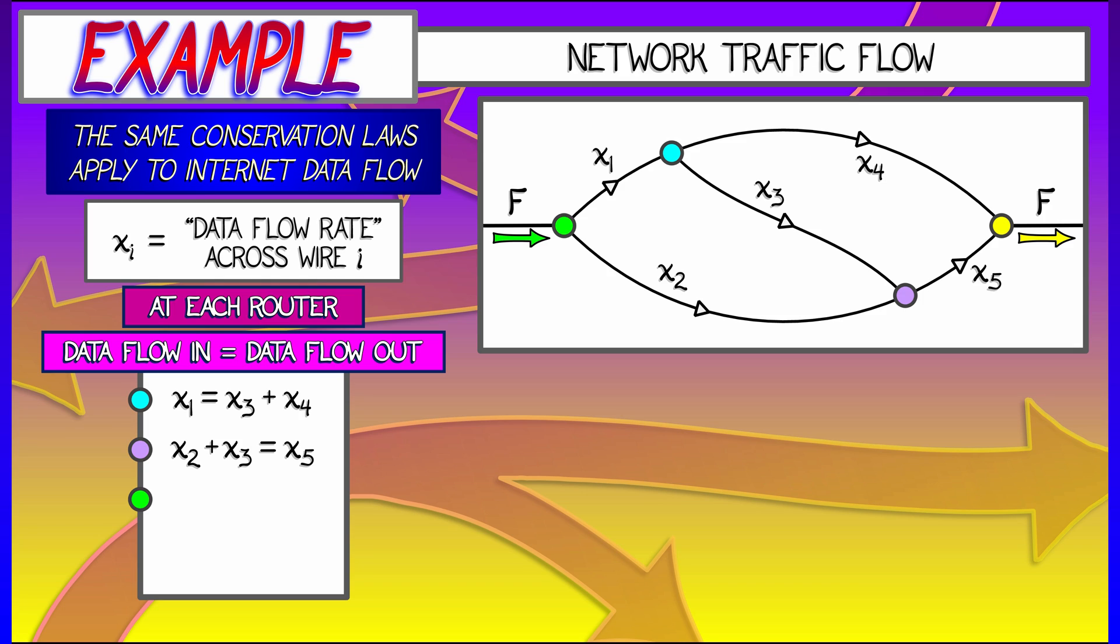Now at the green node on the left, it's assumed that this is something like a source where there's some constant flow rate F coming in, and that gets split by the router into X1 plus X2.